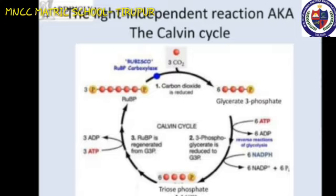Light-independent reaction, also called dark reaction, is carried out in the stroma of the chloroplast. During this reaction, carbon dioxide is reduced into carbohydrates with the help of light-generated ATP and NADPH2. This is also called the Calvin cycle, and is carried out in the absence of light.